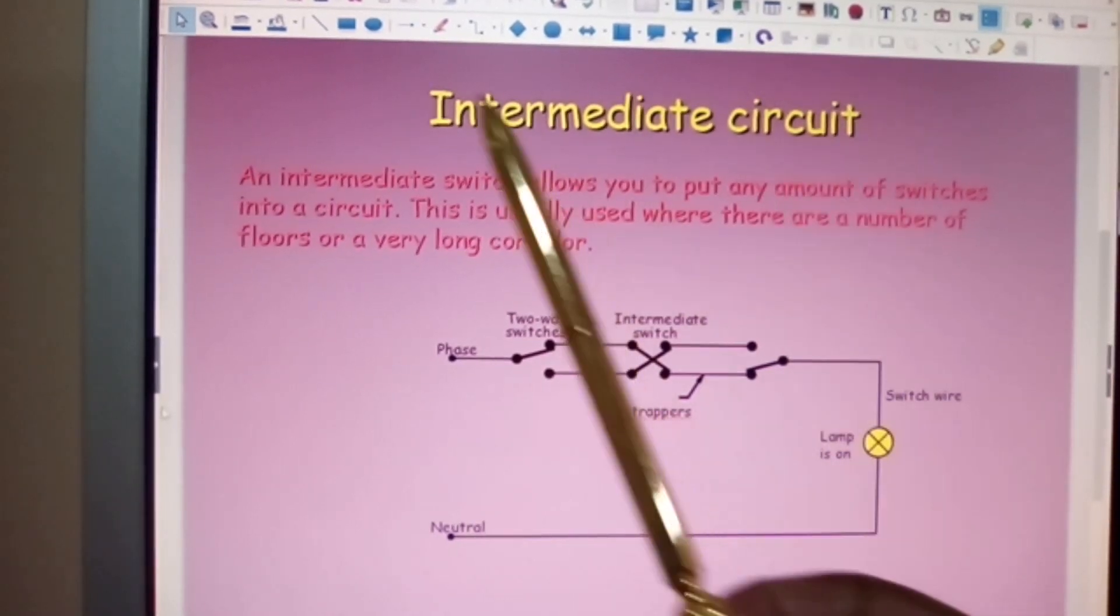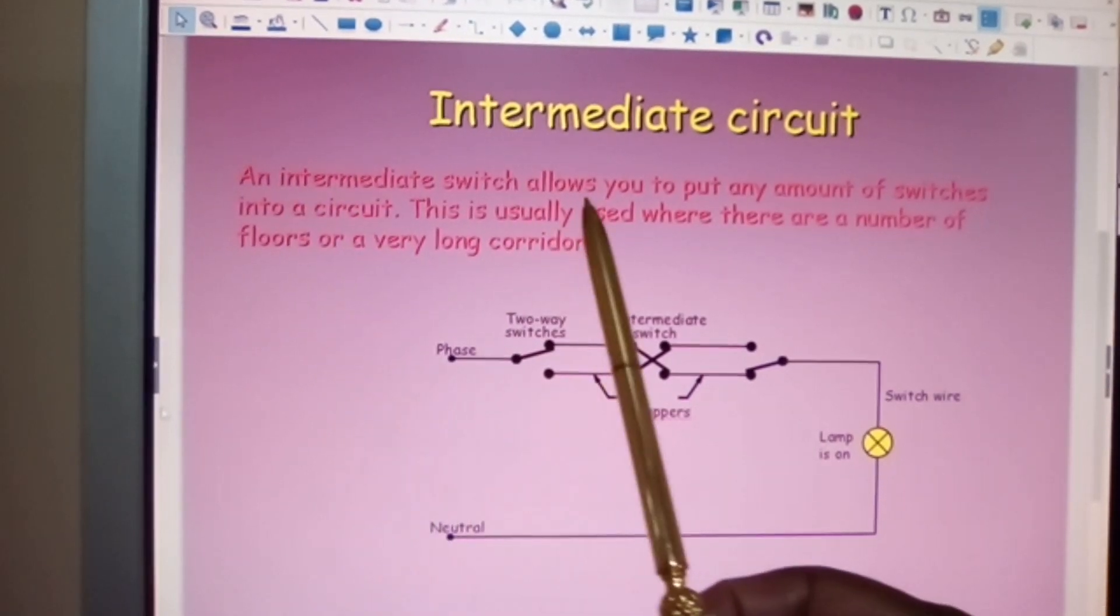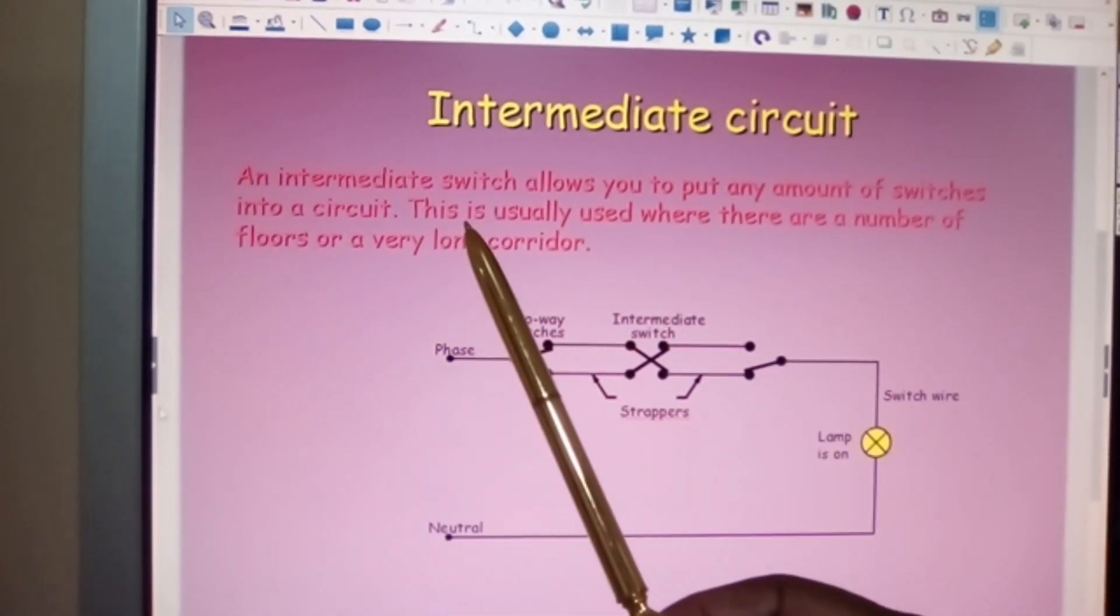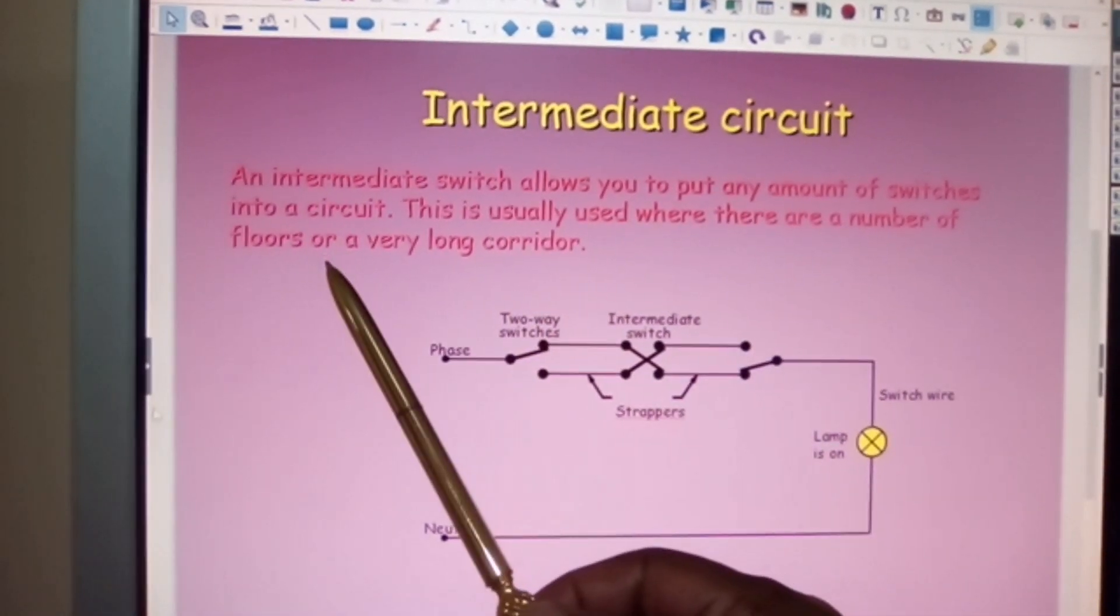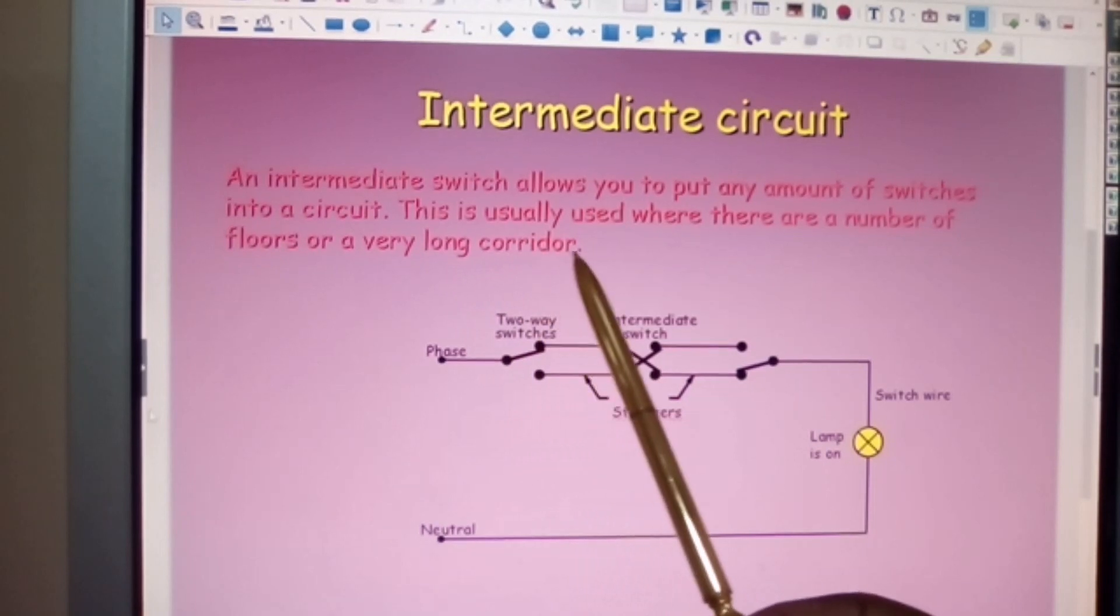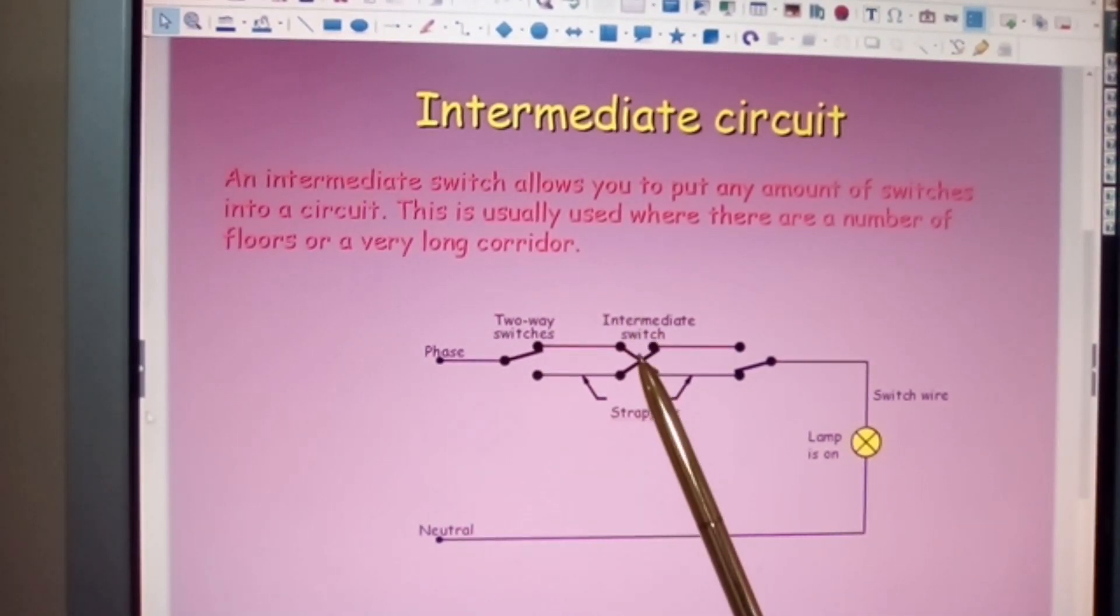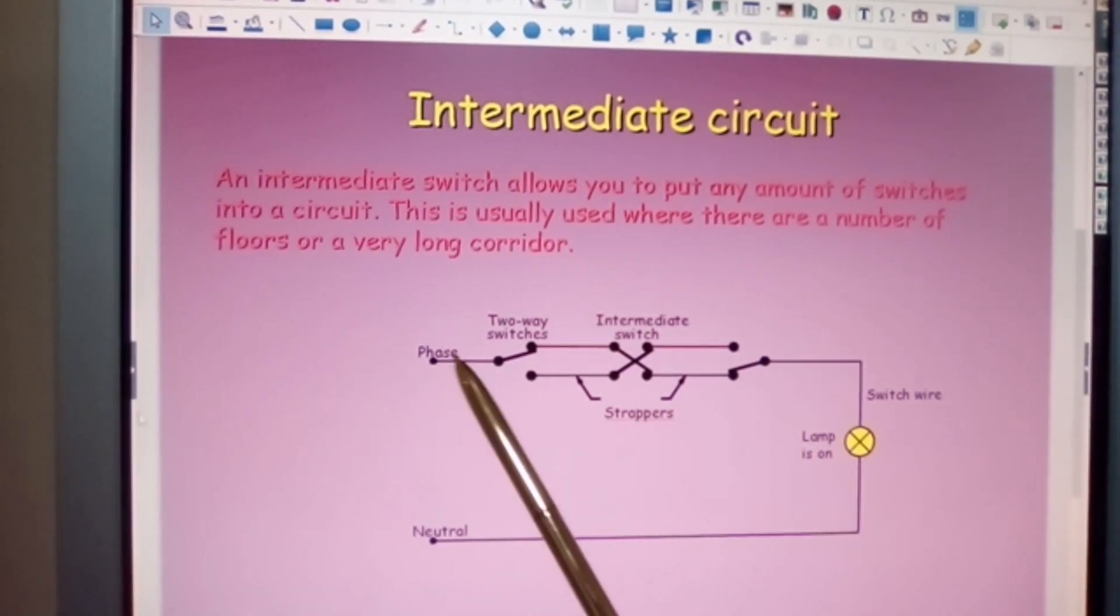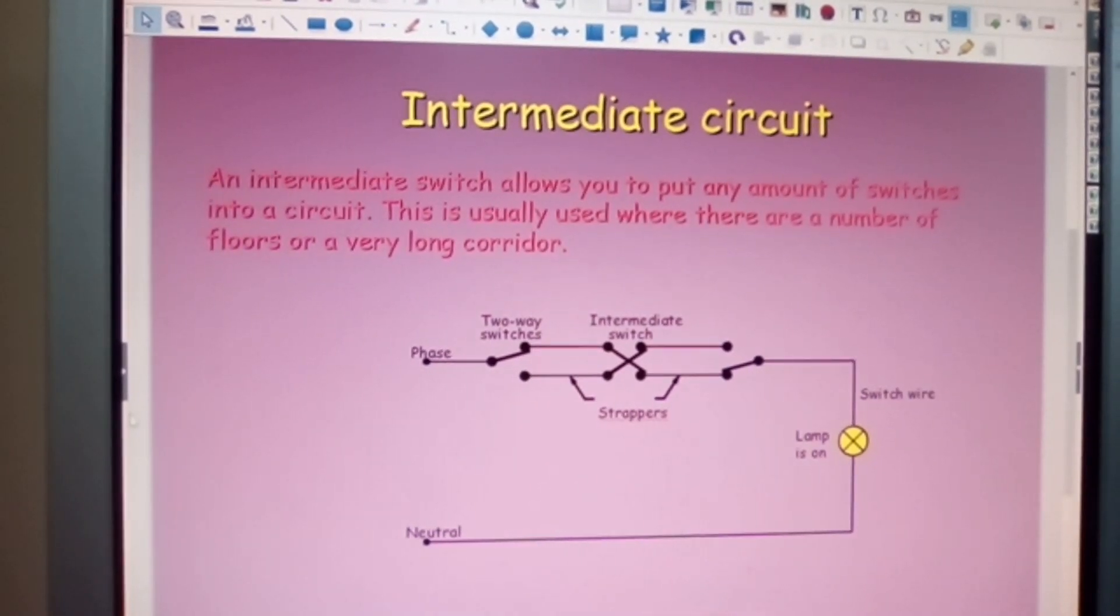The intermediate switch, or intermediate circuit if you prefer. An intermediate switch allows you to put any amount of switches into a circuit. This is usually used where there are a number of floors or a very long corridor. So this could be at the beginning of your corridor. This could be in the middle of your corridor. This could be at the end of the corridor. And again, you'll notice that the phase conductor comes to the switch. It has not come through the neutral.